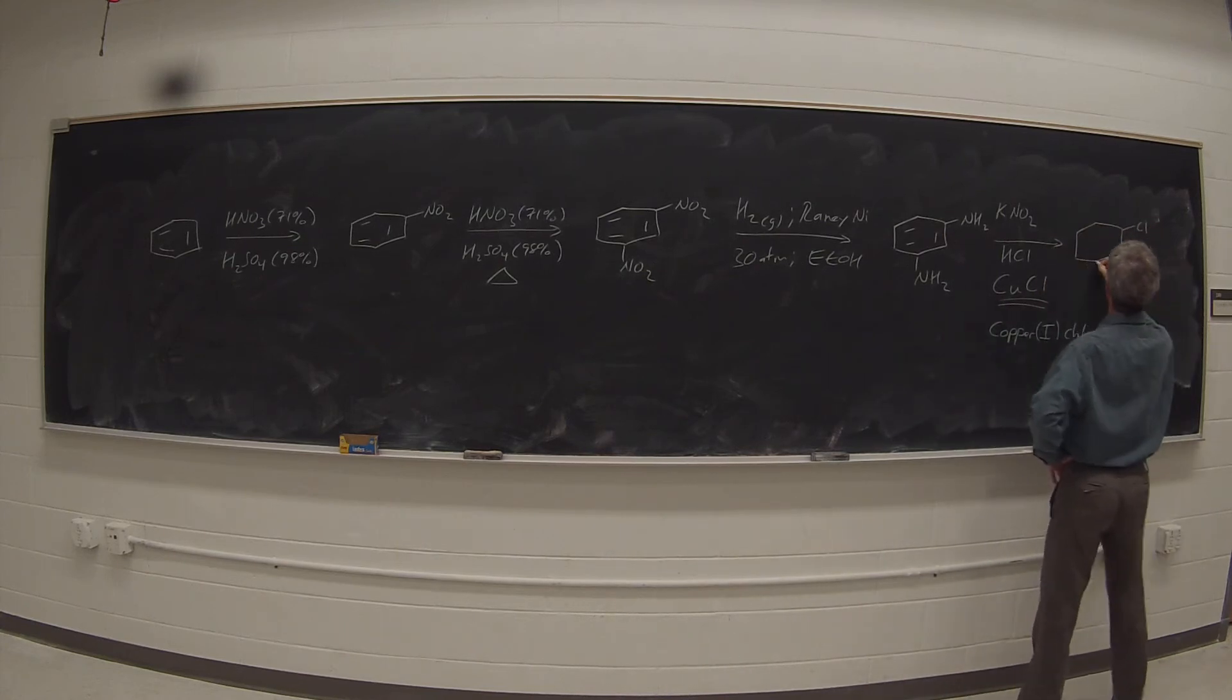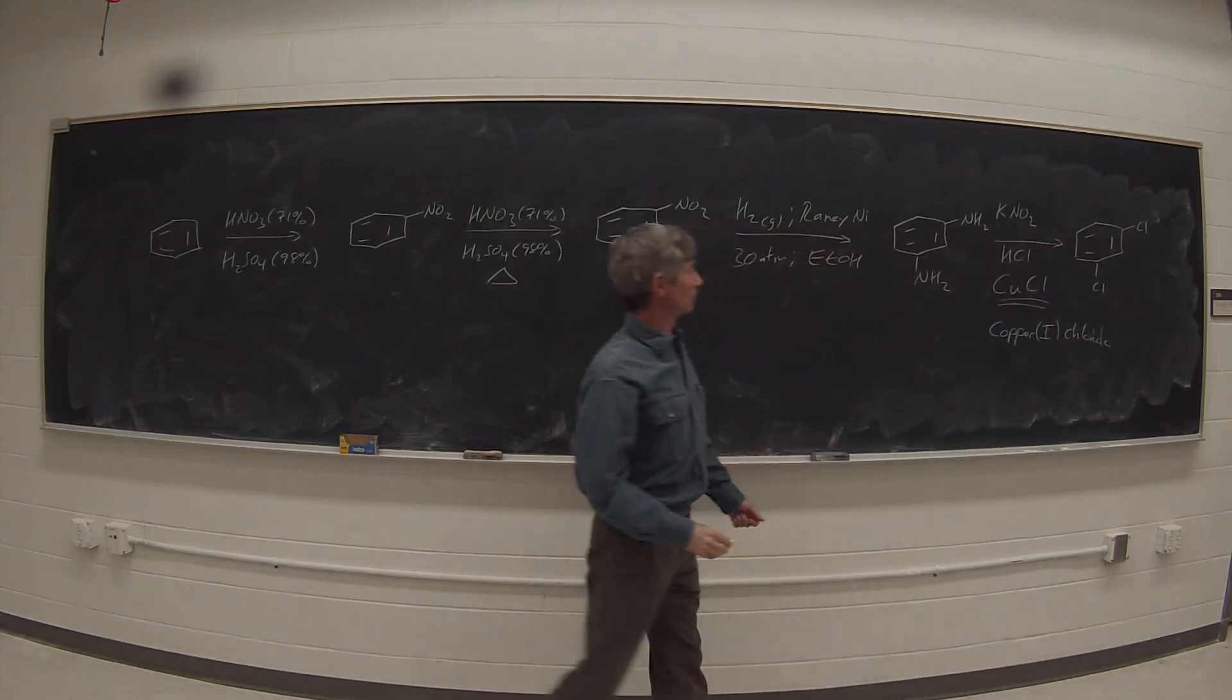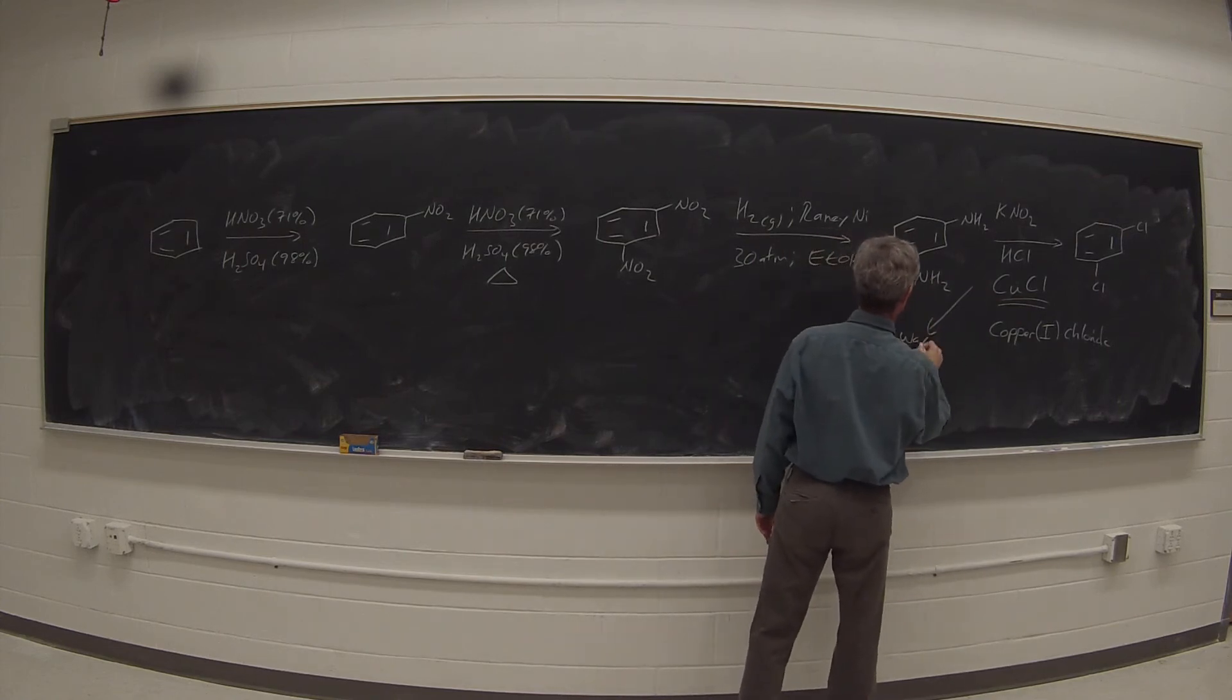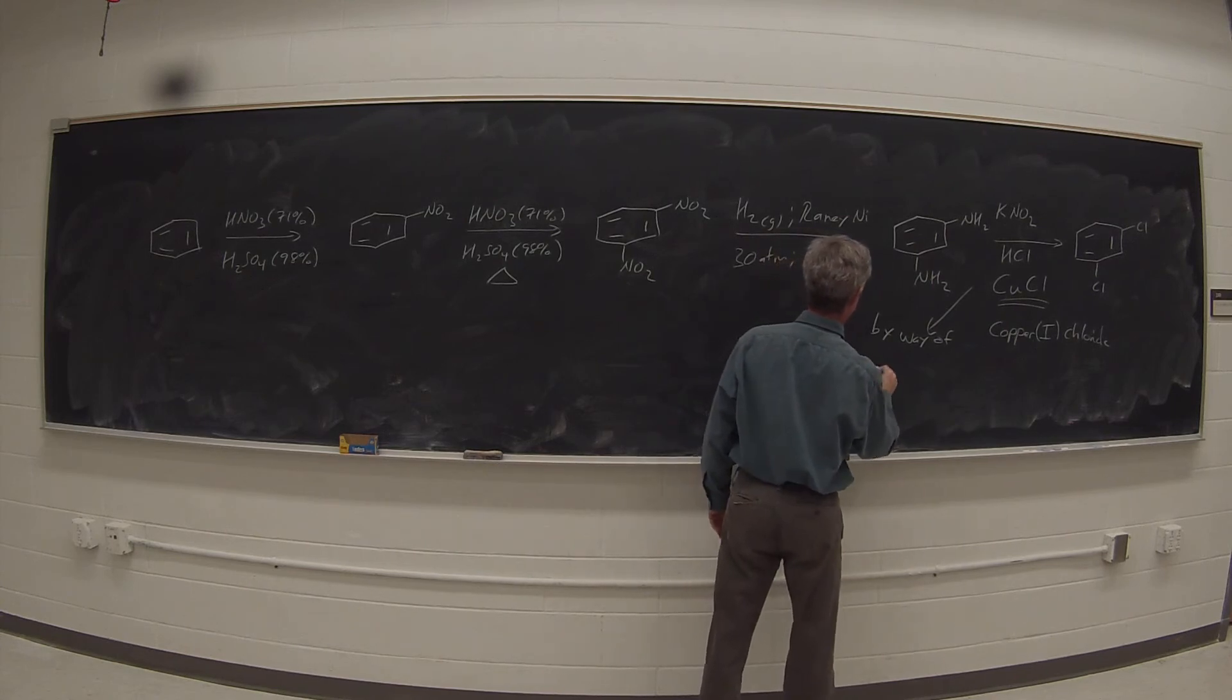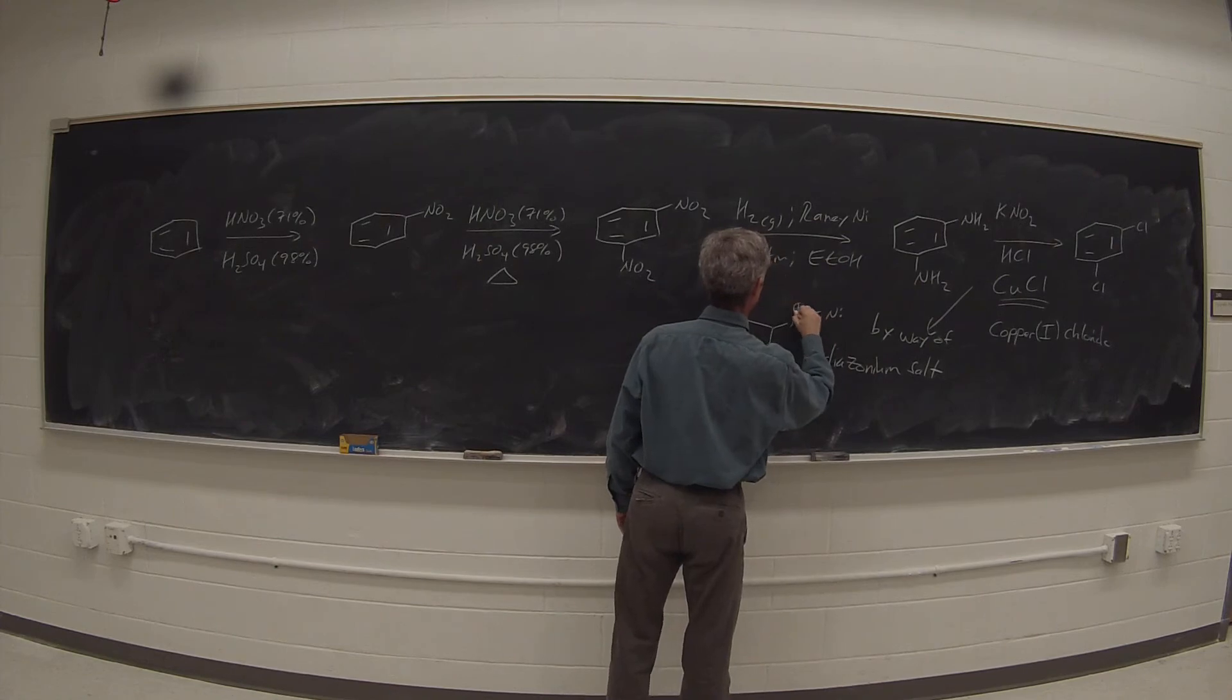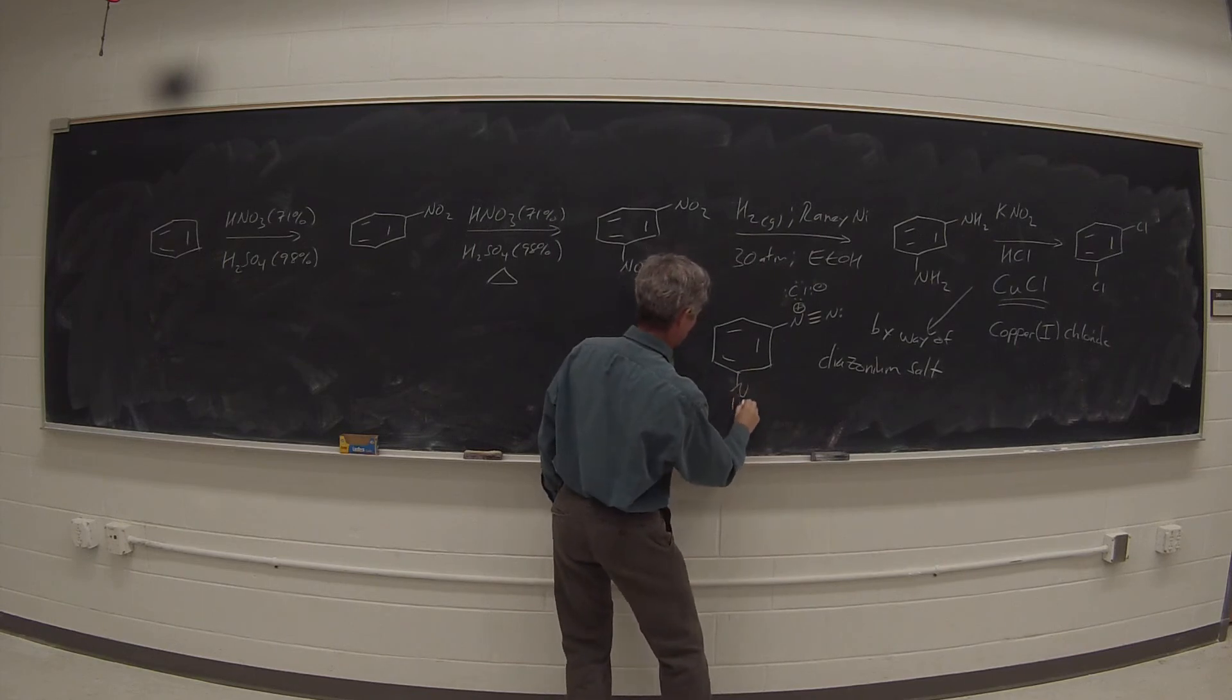That will convert the NH2 groups into chlorine by way of the diazonium salt. We have N triple bond N, which is then displaced by chloride ion.